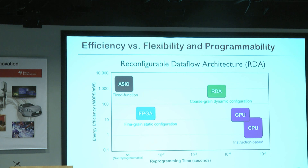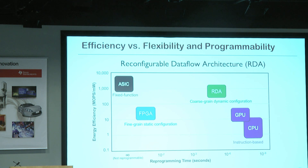If you overlaid Plasticine on top of an FPGA, you would have that capability, but now you're paying two overheads: the overhead of the Plasticine architecture and the overhead of the reconfigurable FPGA. You might ask how it's different from a simulator — it's not fundamentally different; you're just paying a lot of overhead.